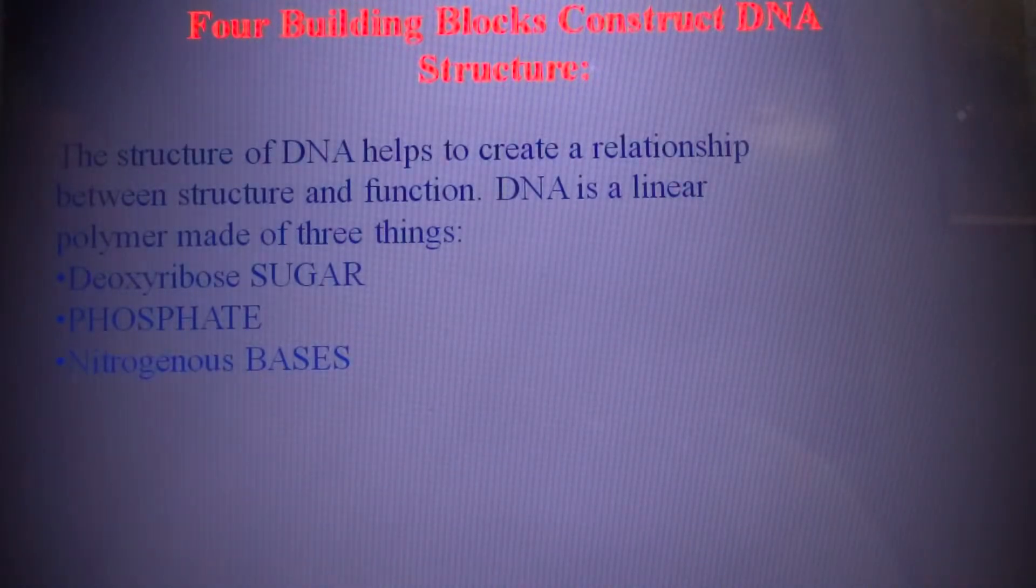Now I come to the four building blocks that construct DNA structure. DNA is a linear polymer made of three things: deoxyribose sugar, phosphate, and nitrogenous bases. The phosphate and sugars are strung together to make a backbone on the outside of the molecule. Each sugar is connected to two phosphate groups and oriented in the same way, so each DNA strand is polar.